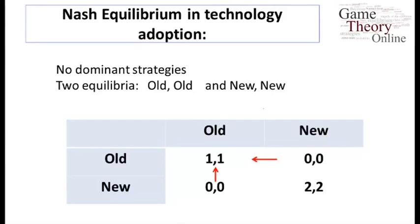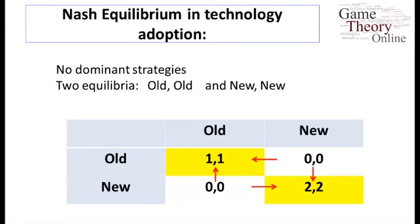Again, the best response depends on the other player. If the other player's choosing old, the best response is old. If the other player's choosing new, the best response is new. We end up again with two different equilibria: old-old and new-new. This is a situation where we could get stuck at the old technology. If we're both using the old technology, nobody wants to move away from it without the other player also moving away. If we're both using the new technology, that's stable as well — two stable equilibrium points.